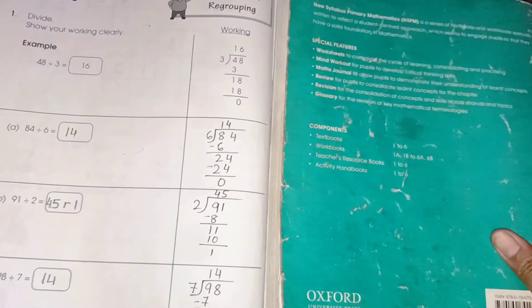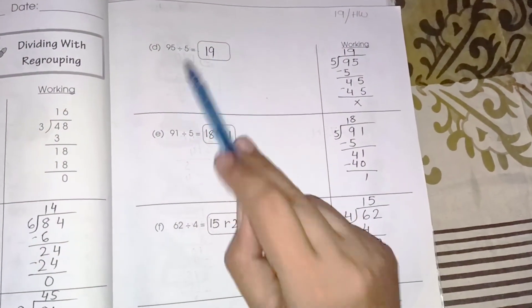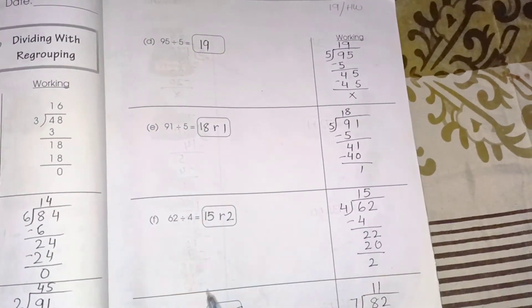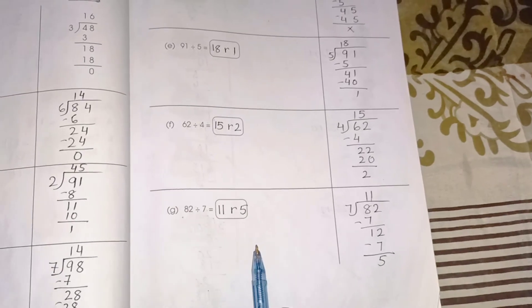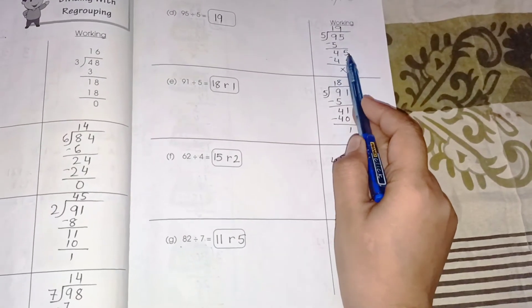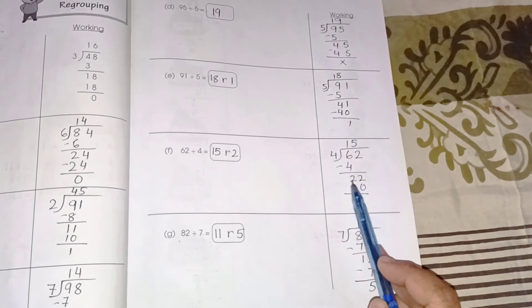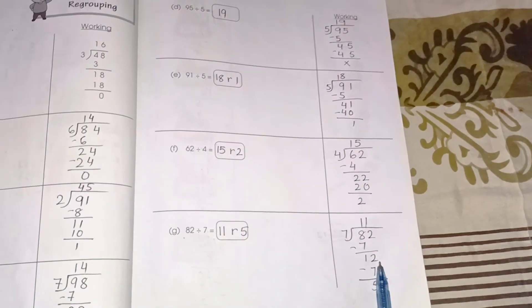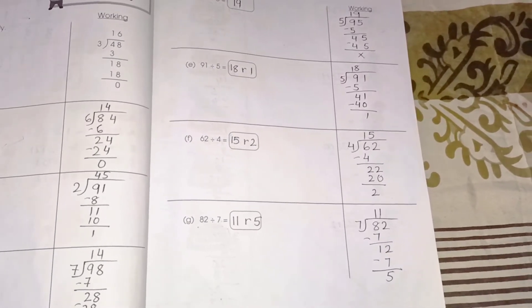With the same regrouping method the answer comes to 14. Page number 89: we have to divide 95 by 5, 91 by 5, 62 by 4, and 82 by 7 using the same regrouping method. We make the regroup of the number, form the complete number, and then divide.